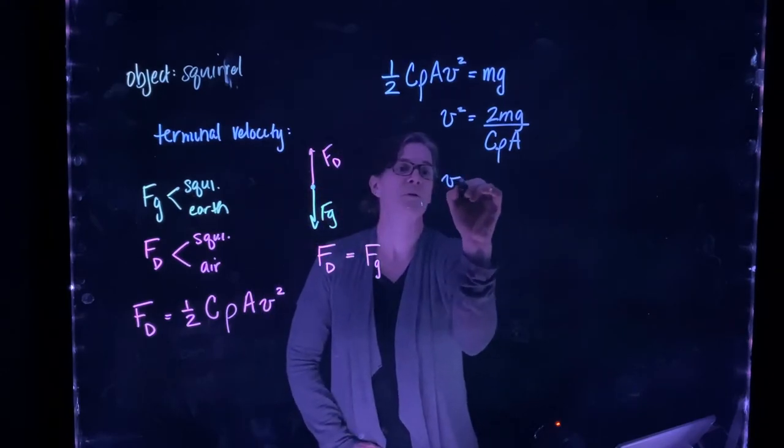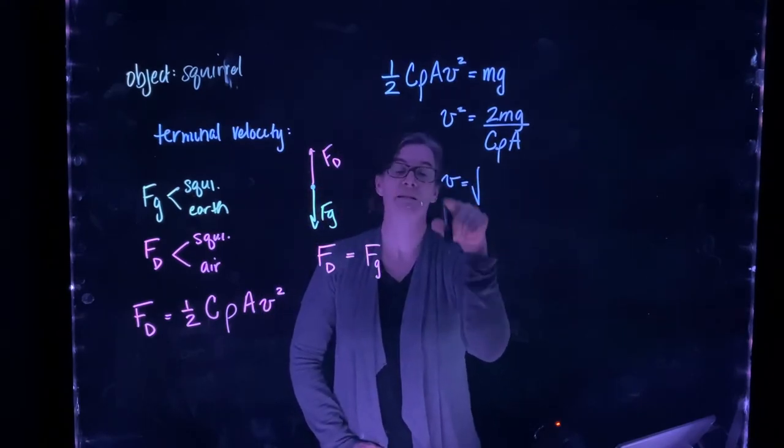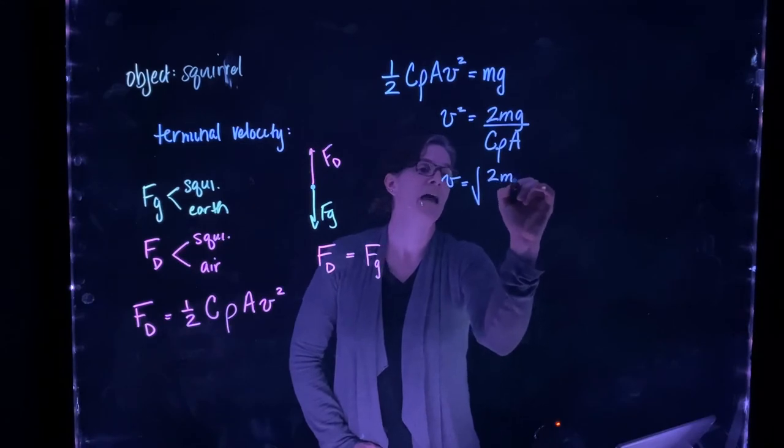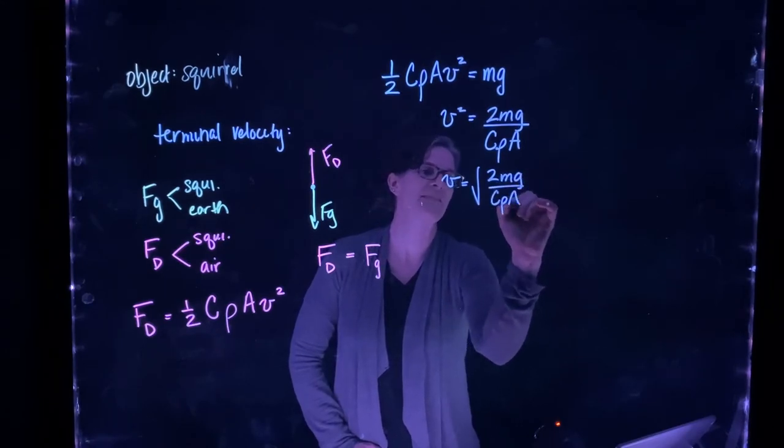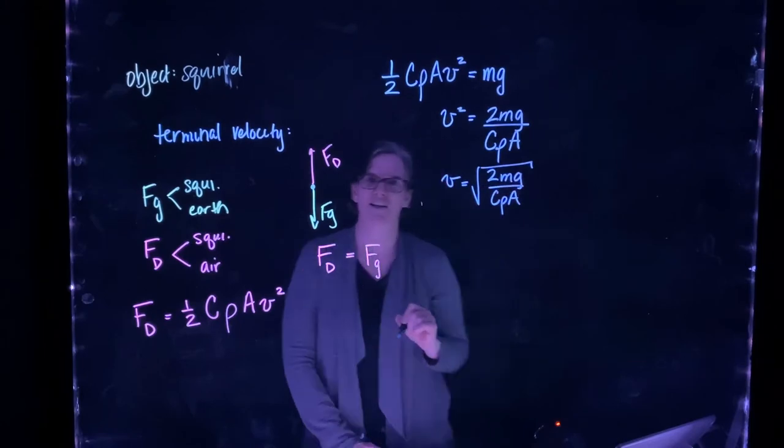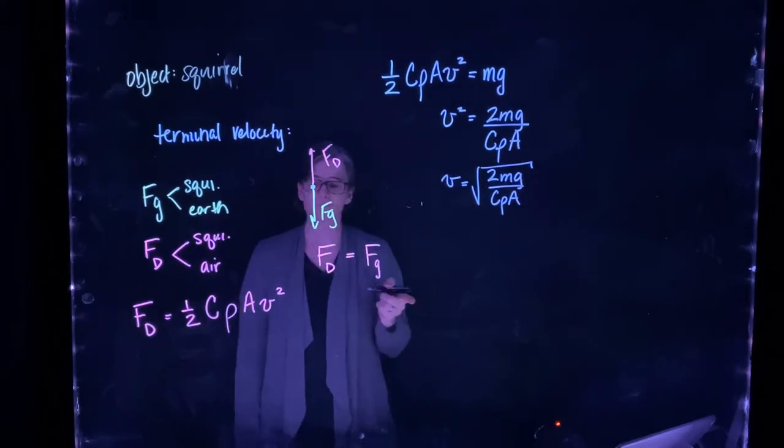We're interested in how fast the object is going at this point, so I'm going to solve for v. I get that the speed is the square root of 2mg over c rho times the area.